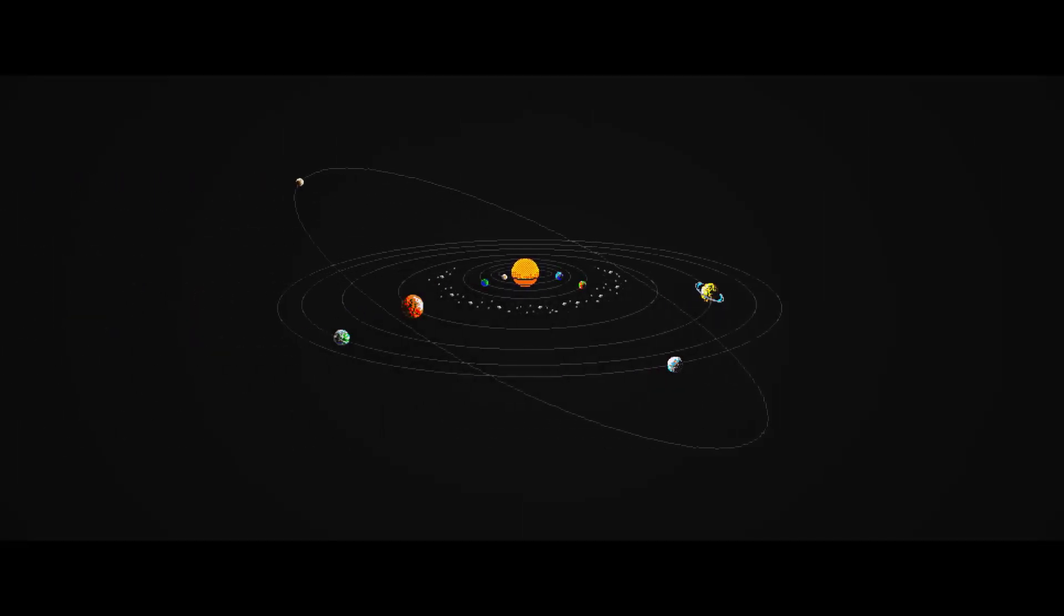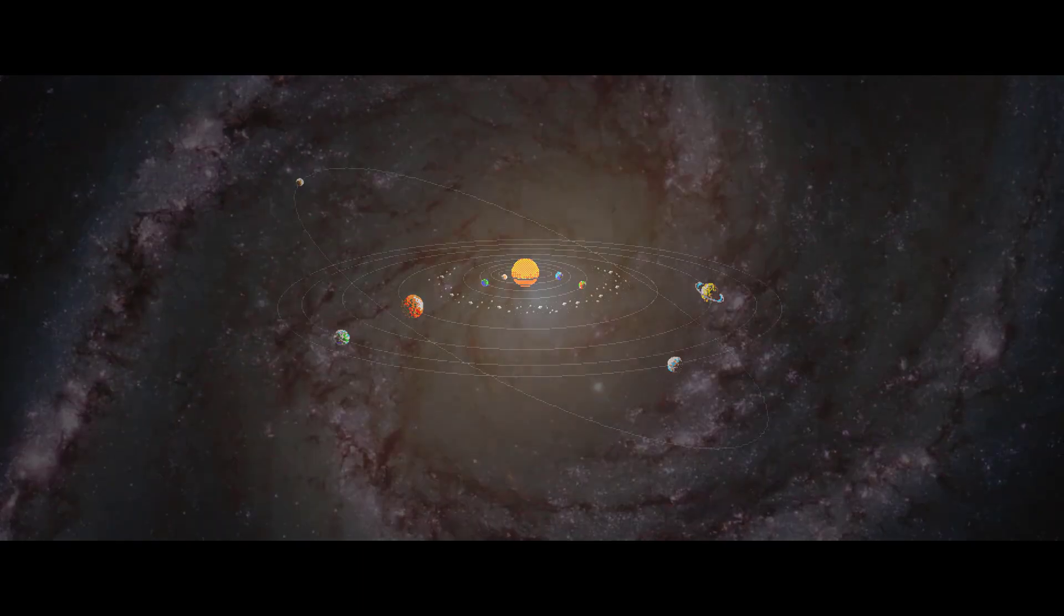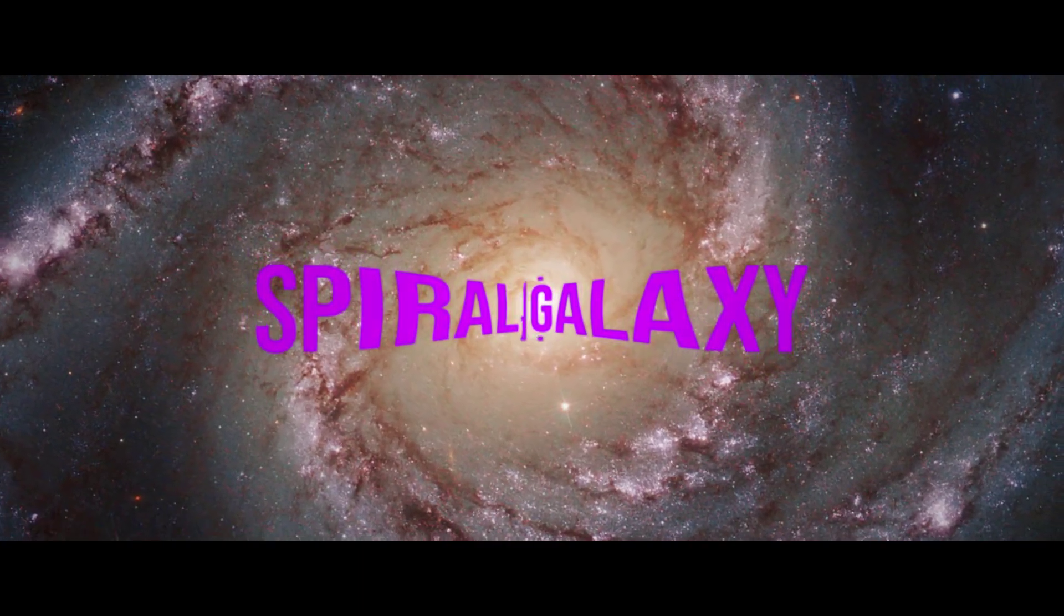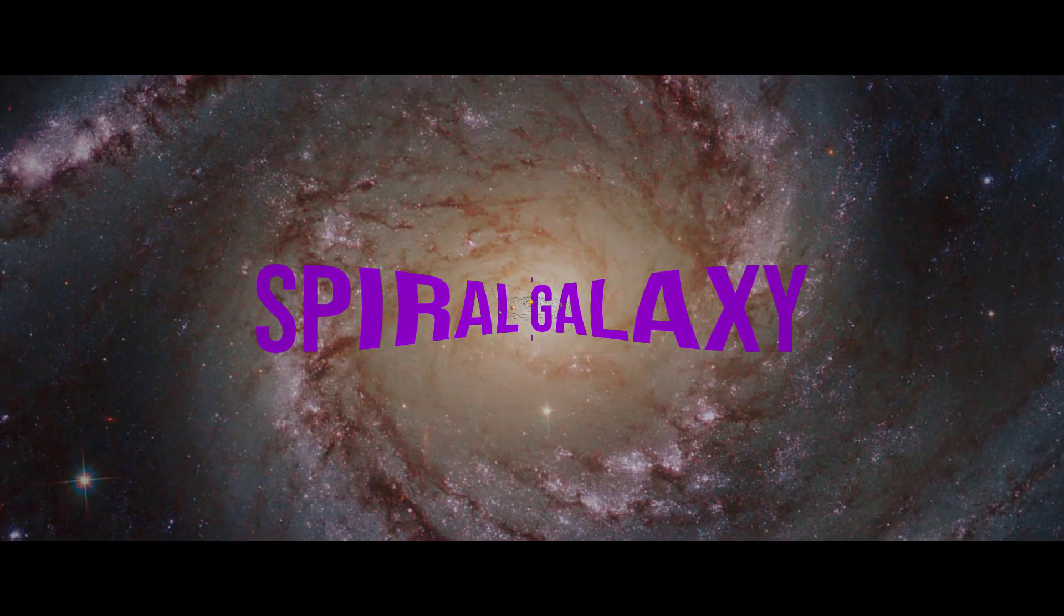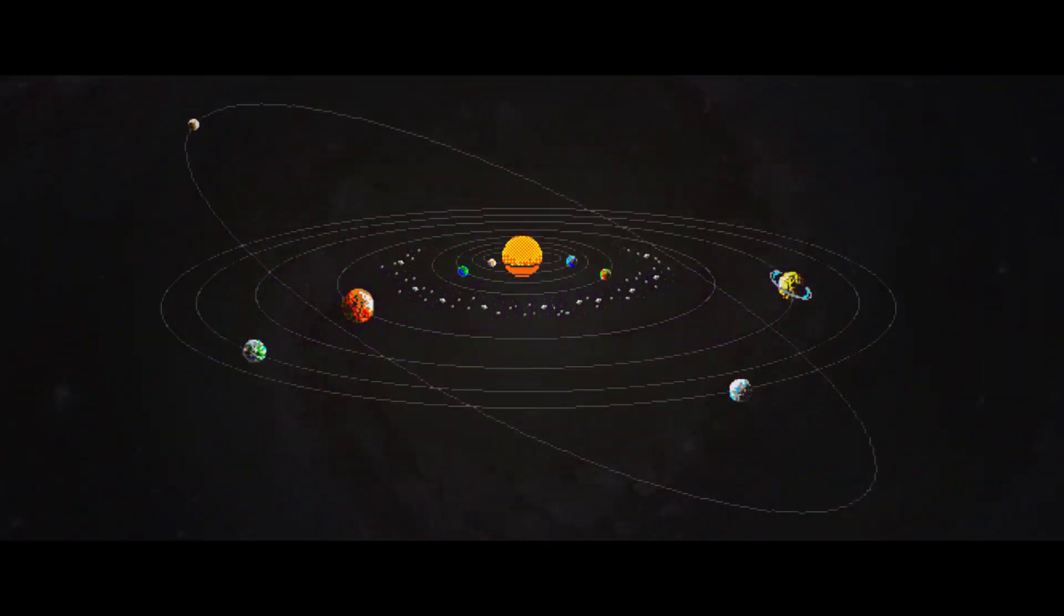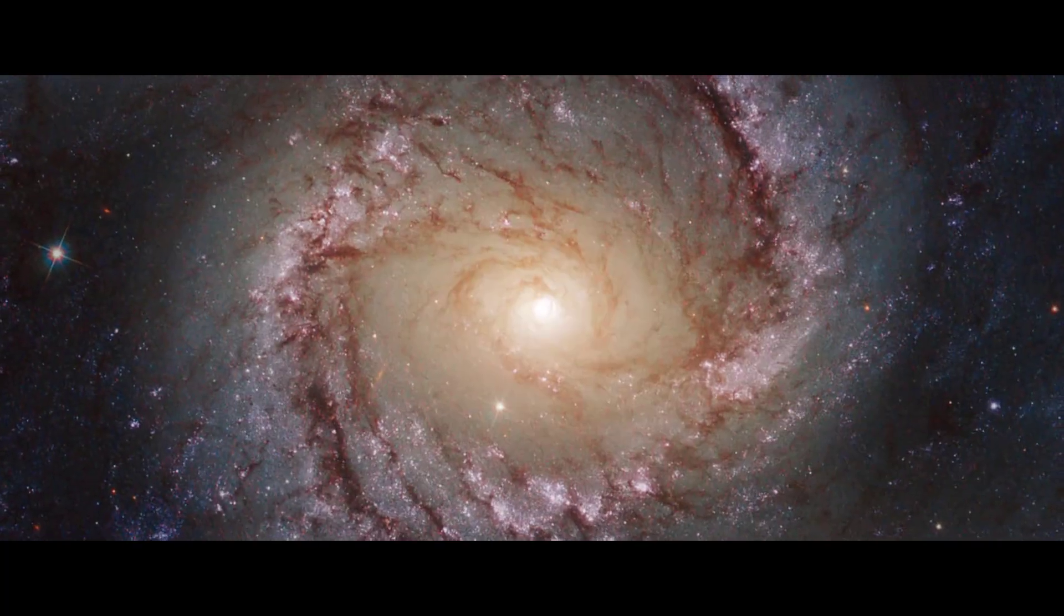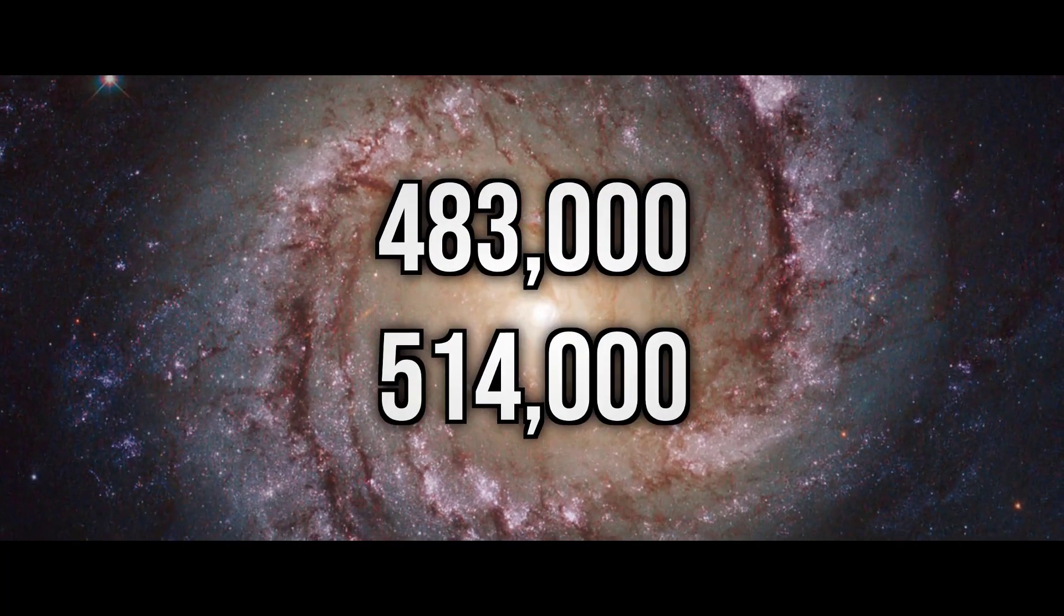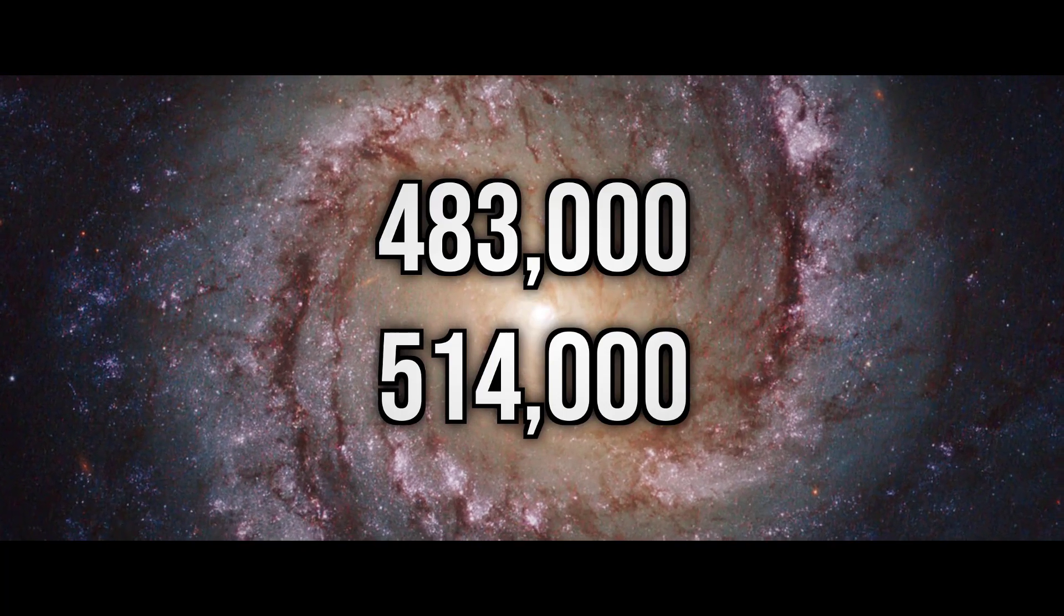But our solar system is moving in more than one way, as it's also part of the Milky Way galaxy, which is known as a spiral galaxy. Because of this, you can calculate the time it takes for our solar system to move around the galaxy once, which puts it moving at a speed of around 483,000 to 514,000 miles per hour.